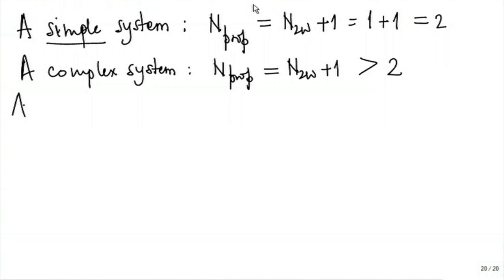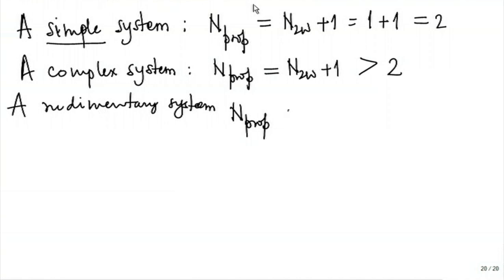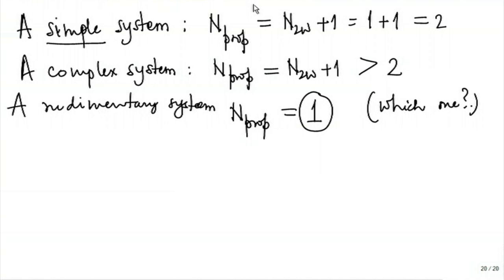For a rudimentary system, although we need only one property, we do not know which one. But if we define more than one property, all the other properties will depend on that single property. You define one property, that defines the state, and that defines all other properties you may need.